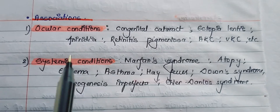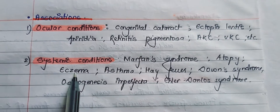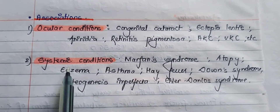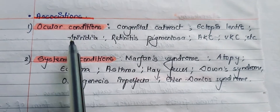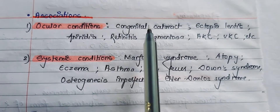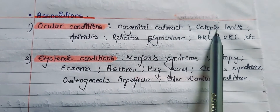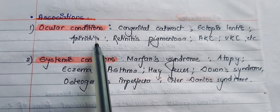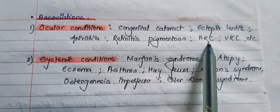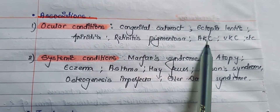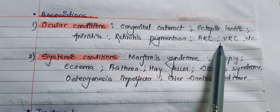Keratoconus can be associated with various ocular and systemic conditions. The ocular conditions associated with keratoconus include congenital cataract, ectopia lentis, aniridia, retinitis pigmentosa, atopic keratoconjunctivitis, and vernal keratoconjunctivitis.